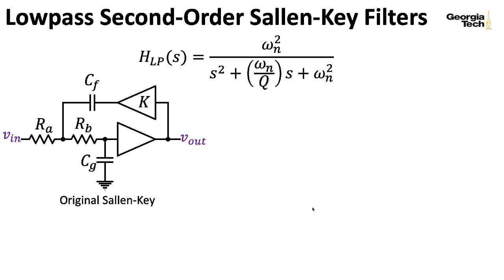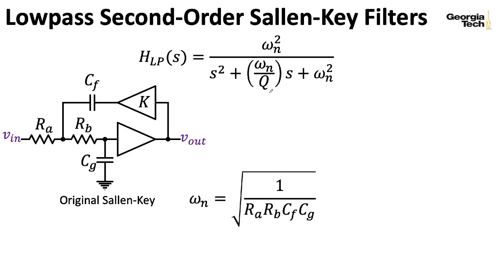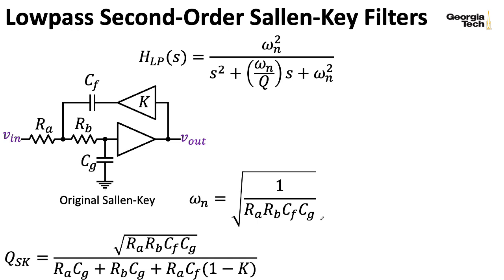In terms of the canonical low-pass function specified in terms of a natural frequency omega and a quality factor Q, you can go through a ton of math and discover that the natural frequency is given by the square root of the product of the resistances and the capacitances, and Q is given by an insanely complicated formula. The main thing to notice is that Q is a function of everything — the resistances and the amount of feedback — whereas the natural frequency is not a function of K; it's only a function of the resistances and capacitances.